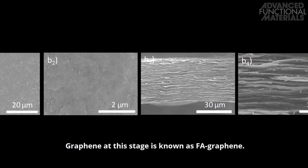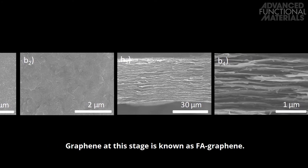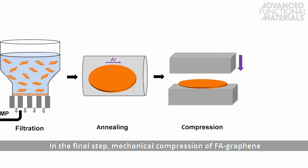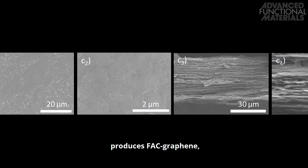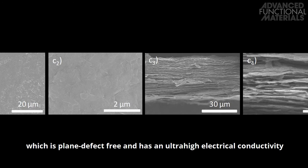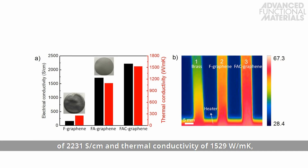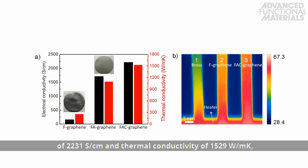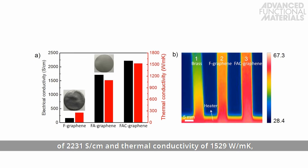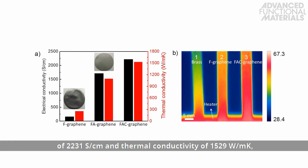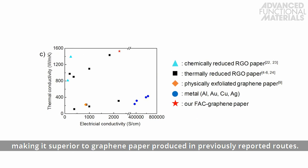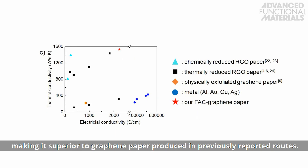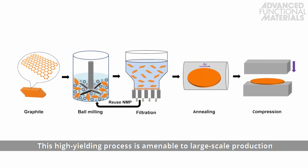Graphene at this stage is known as F-A graphene. In the final step, mechanical compression of F-A graphene produces F-A-C graphene, which is plain, defect-free and has an ultra-high electrical conductivity of 2,231 Siemens per centimeter and thermal conductivity of 1,529 watts per meter Kelvin, making it superior to graphene paper produced in previously reported routes. This high-yielding process is amenable to large-scale production for practical applications.